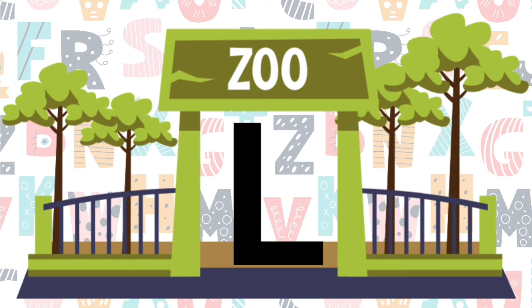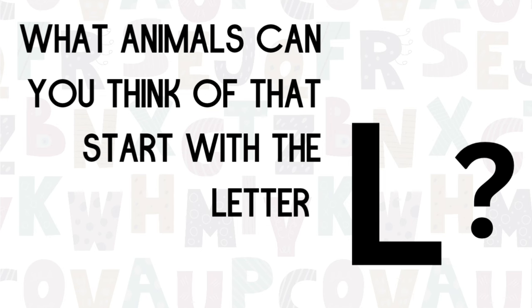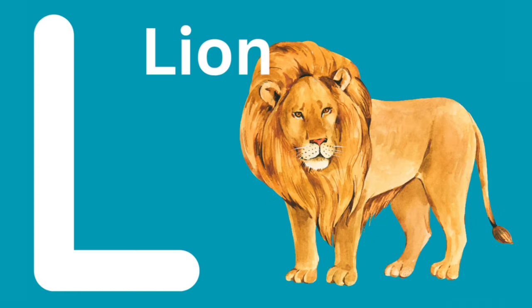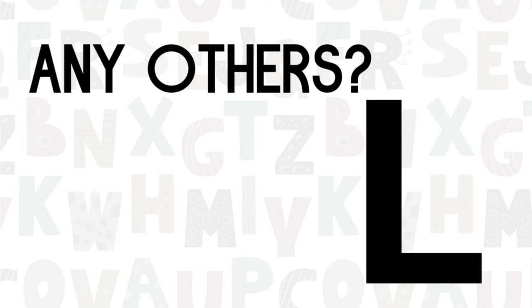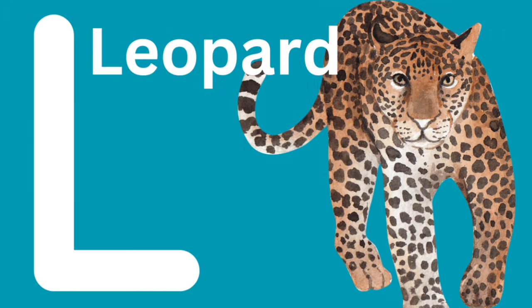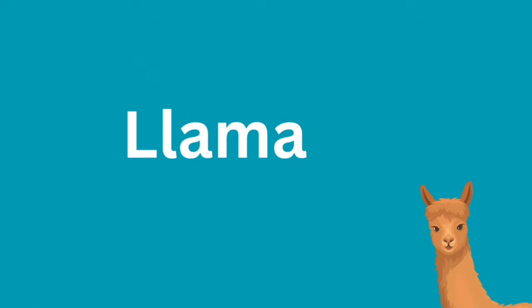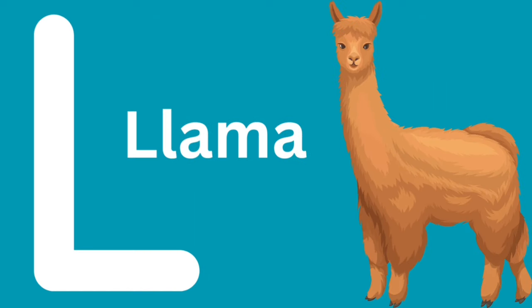Can you think of any animals at the zoo that start with the letter L? The L says l. How about a lion? L, l, lion. Can you think of any other animals that start with the letter L? What about a leopard? L, leopard. Or maybe a lemur. L, lemur. Or even a llama. L, llama.